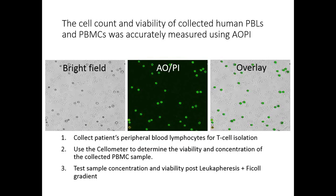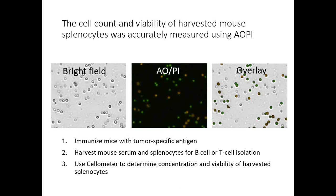The next example is collecting human PBMCs or PBLs — peripheral blood lymphocytes. After separation using leukapheresis or Ficoll, you can use the cellometer to measure the AO/PI stained PBMCs. Another example is mouse splenocytes — immunizing mice with tumor-specific antigen, then harvesting mouse serum and splenocytes for B cell or T cell isolation. Again, the cellometer can measure the concentration and viability of AO/PI stained splenocytes.